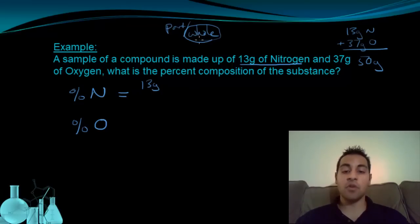So, when I do part out of the whole, for nitrogen, 13 is the part, and it's out of a total of 50 grams, times 100.